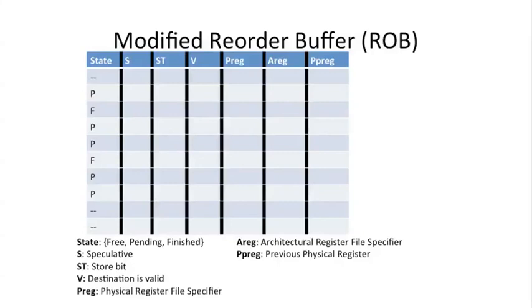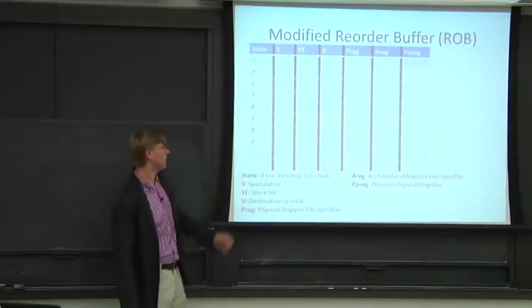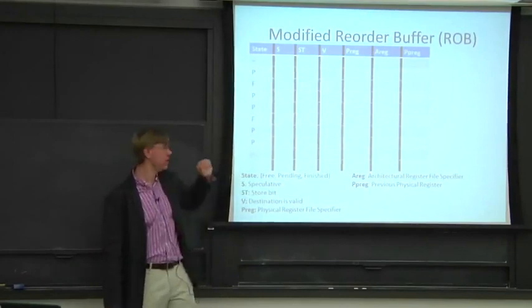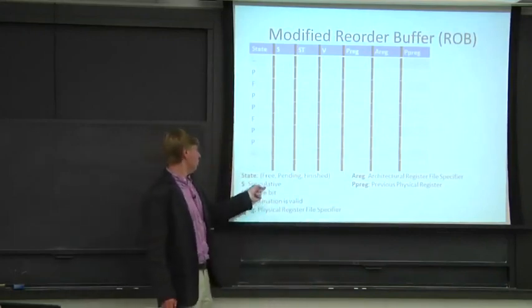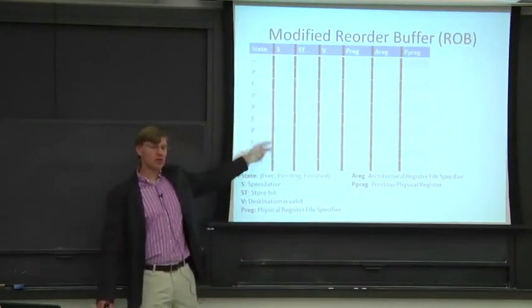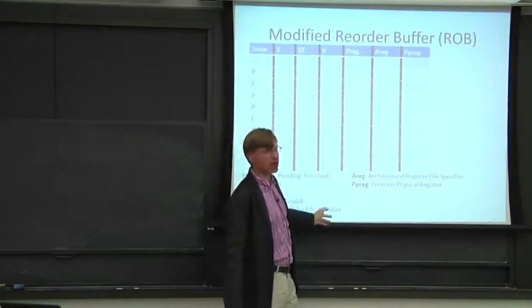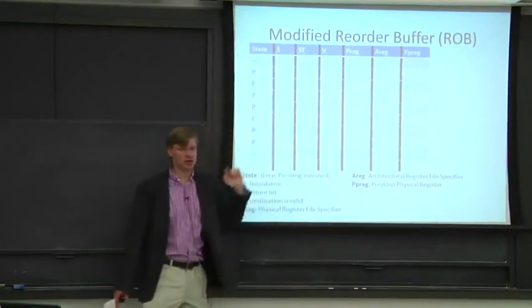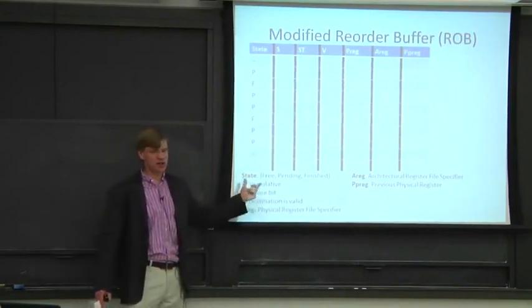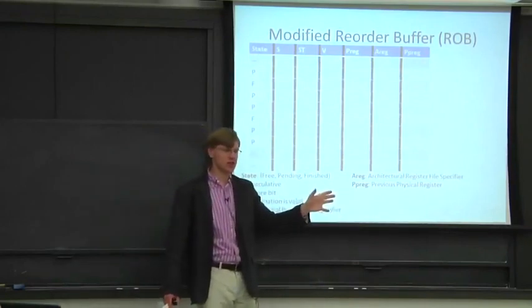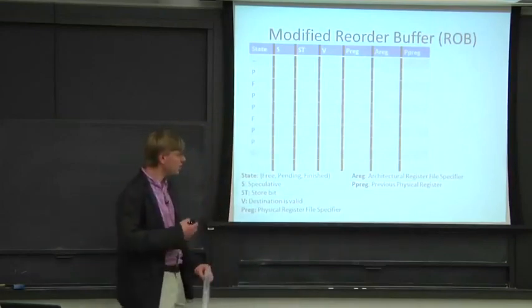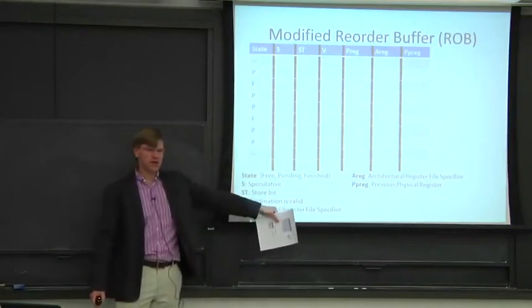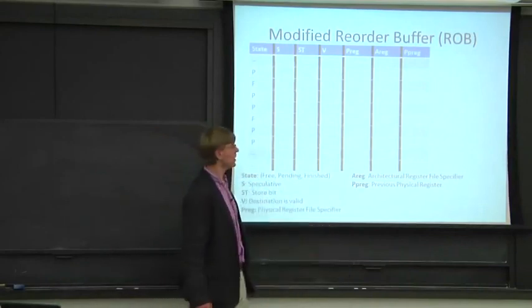Now let's look at the data structures we add to the reorder buffer. Our previous reorder buffer had state fields — pending, free, or finished — where dashes represent free and F means finished, meaning the instruction reached the end of the pipe and is waiting to commit. We had a bit for whether it was after a branch, a bit for whether it's a store, and a bit for whether it writes a register, indicating a valid destination. We also had a physical register file specifier telling us where to read from.